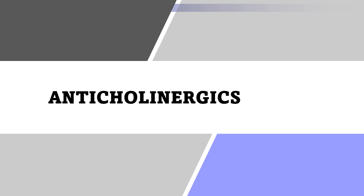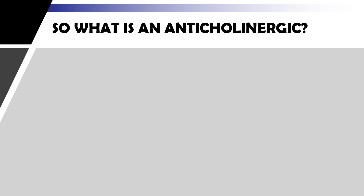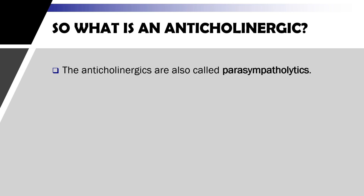The first group of pre-anesthetic agents we are going to discuss are the anticholinergics. Anticholinergic medications are drugs that block and inhibit the activity of the neurotransmitter acetylcholine at both the CNS and the PNS at synapses. They are also known as parasympatholytics because they block the action of acetylcholine, particularly at the parasympathetic nervous system. They are also known as sympathomimetics because they mimic the action of the sympathetic nervous system.